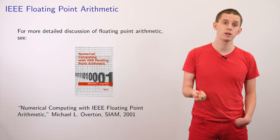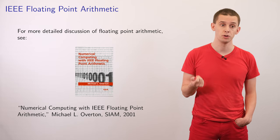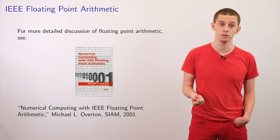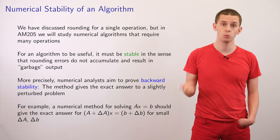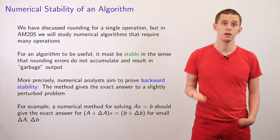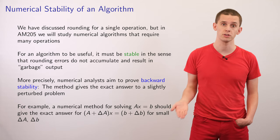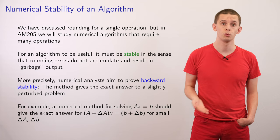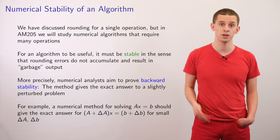If you're interested in learning more about IEEE floating point arithmetic, I recommend the book Numerical Computing with IEEE Floating Point Arithmetic by Michael Overton. We've now looked at the rounding error associated with one floating point operation, but in this course we're going to look at algorithms where we chain many floating point operations together.